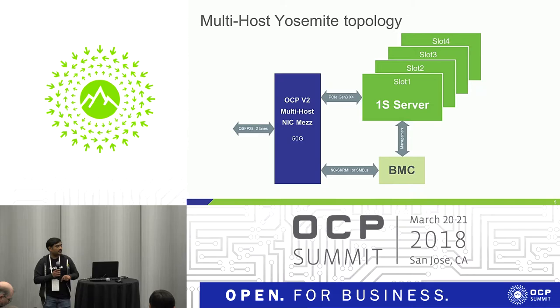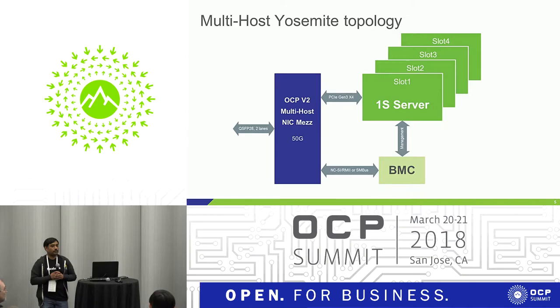This is a logical topology. As you can see, there are four independent servers and then the BMC, all sharing one multi-host NIC, with one cable going out.